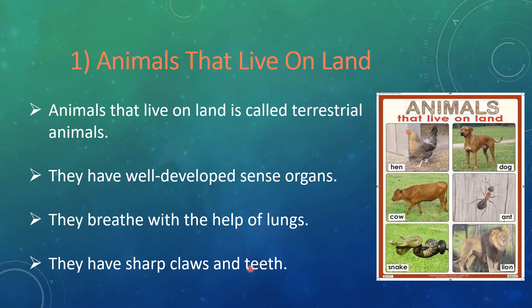Terrestrial animals like cow, horse, and goat have flat teeth. Some terrestrial animals are found near our home, like dog and cat. Some terrestrial animals will be in the zoo.